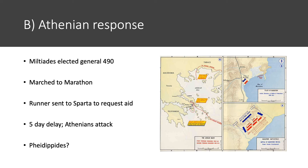Immediately after the Greek victory, a runner named Pheidippides took the message to Athens. The story tells us he ran so fast over the 26 miles from Marathon to Athens that as soon as he announced the victory, he dropped dead — probably not literally true, but this is at least the origin of the marathon as a concept. It becomes a central event in the Olympic games, which is why when you run a marathon today it's 26.2 miles.